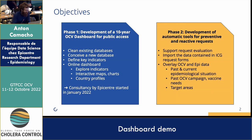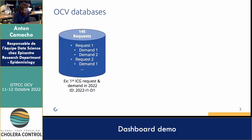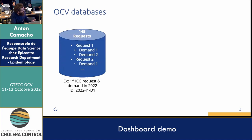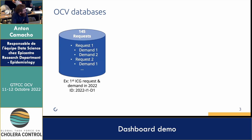The first step here is to present the dashboard, but first I need to go through a brief slide to explain the structure of the data. Up to now we have 145 requests. Each request can ask for multiple demands — it happens that a country asks for a new demand of doses attached to a request. For instance, the first ICG request and demand in 2022 would be called 2022 I1D1.